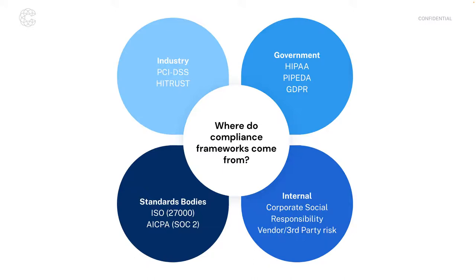A similar industry standard is HITRUST around healthcare data, which leads over to government-sourced regulations. HITRUST is primarily geared to help organizations implement and maintain compliance with HIPAA, which governs healthcare data in the U.S. The U.S. Congress designed the Health Insurance Portability and Accountability Act, setting requirements around protecting healthcare information. HIPAA is pretty high level and written in legalese, not IT speak. So HITRUST is a compliance framework that helps organizations understand the controls they need to put in place to be compliant with HIPAA.